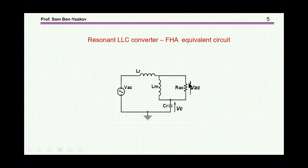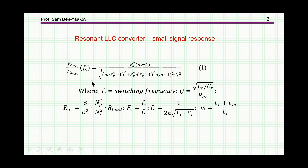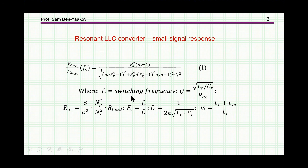This is the equivalent circuit for the LLC converter — we now have a sinusoidal AC excitation and R_ac representing the load. The transfer function of this resonant LLC converter is very similar to what we saw before; the expression differs slightly, but the transfer function is again a function of the ratio between the switching frequency and the resonant frequency. In the conventional approach, we control the switching frequency while the resonant frequency is kept constant.